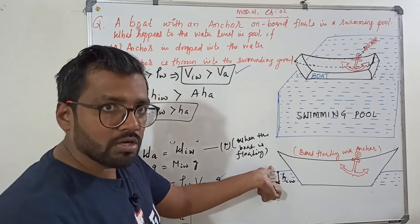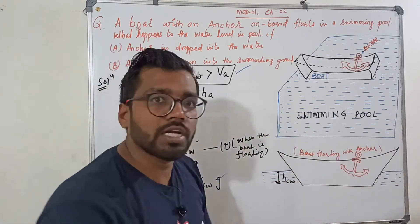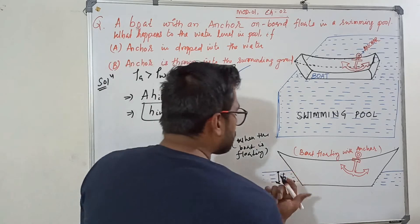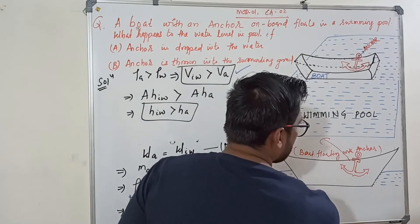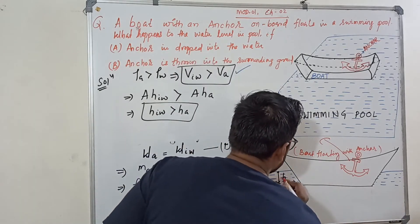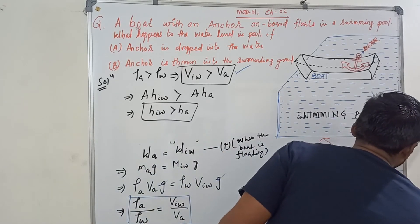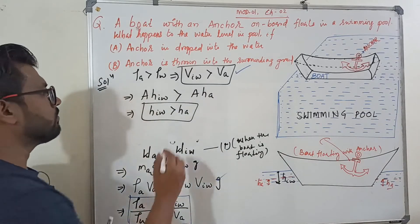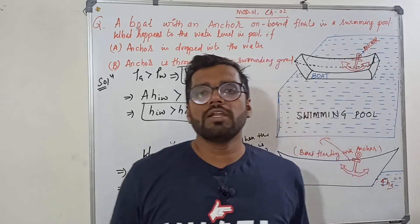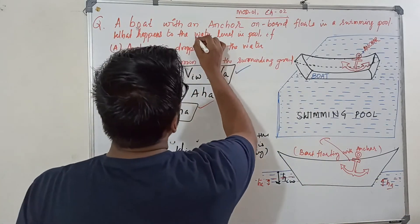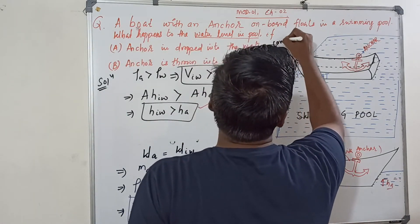This means the water level when the anchor was inside the boat is more than the water level when the anchor is outside the boat — whether the anchor is dropped into the water or thrown onto the ground. In both cases, the liquid level will drop. The water level in the pool will come down.